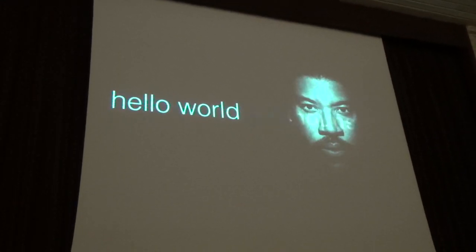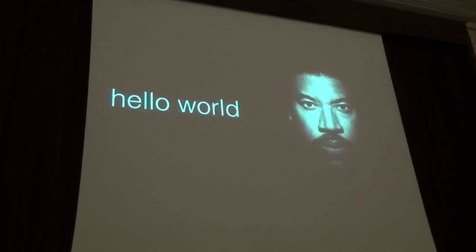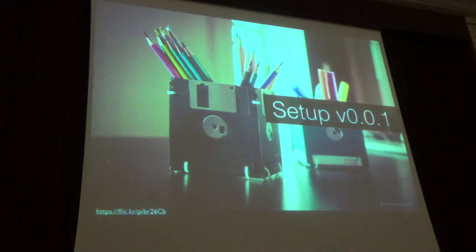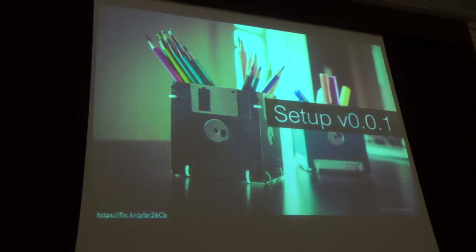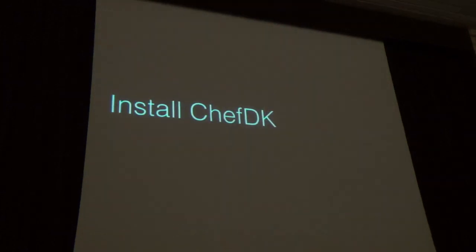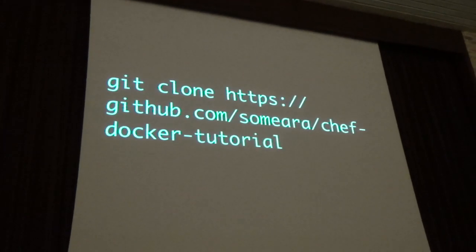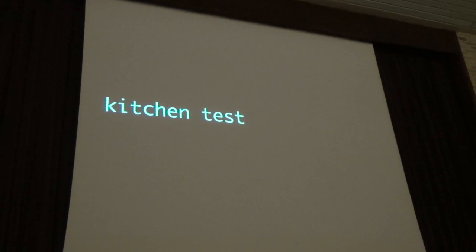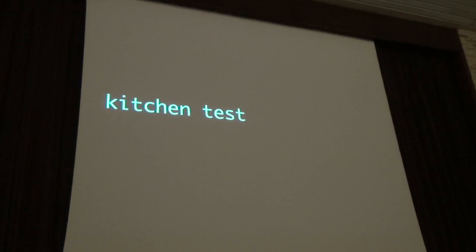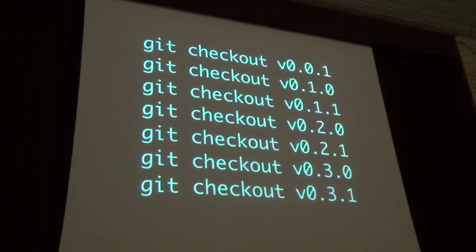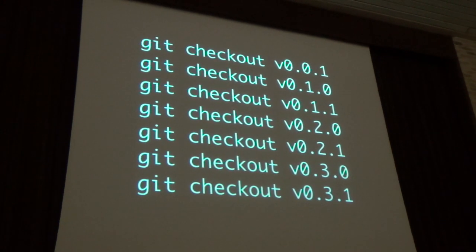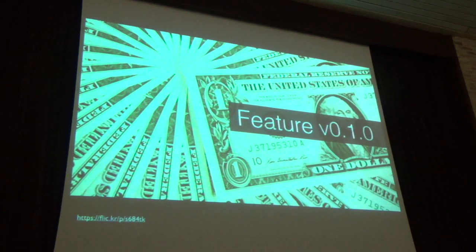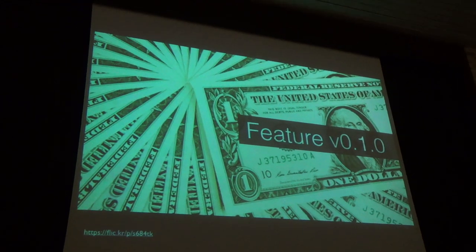If you want to follow along after you leave the room, google the talk and it'll come up. You need to install kitchen-docken, clone the repo, and run kitchen test. If that works you're set up. The git repo is tagged so as you go through the talk the different parts have tags, and you can look at the files I'm talking about as we go.